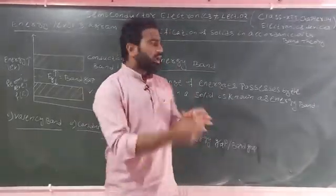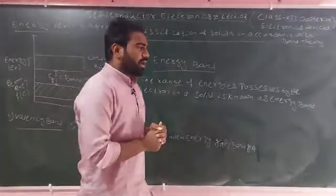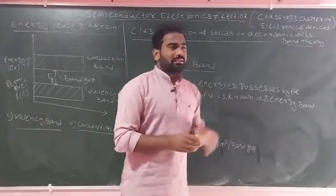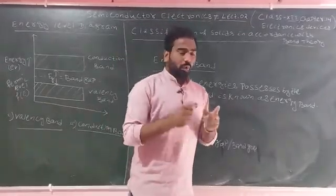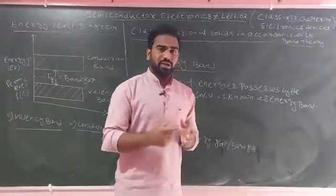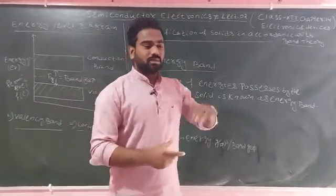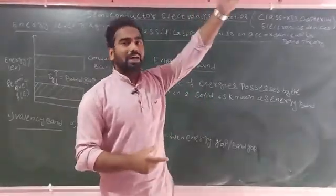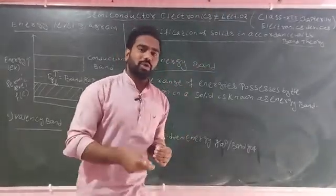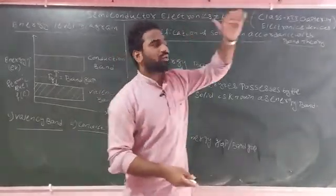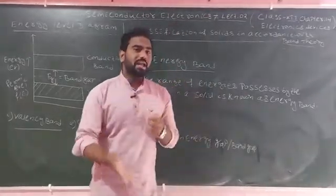Now, what is the energy band? Electrons are capable of changing their orbit when they gain some amount of energy. The electron gets excited and jumps from the ground state to a higher energy orbit. When energy is lost, it moves from a higher orbit to a lower orbit — meaning the electron gains and loses energy.